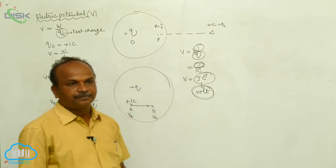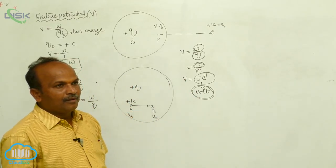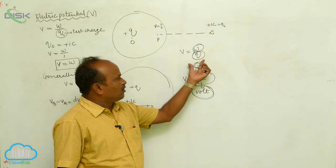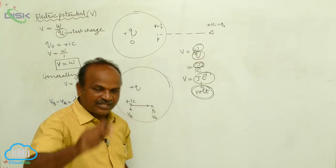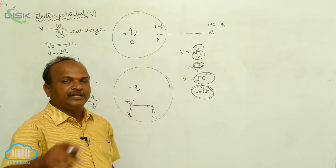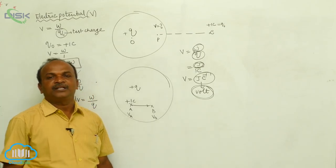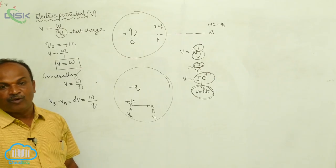What is the definition of volt? One joule of work is done by one coulomb of charge between any two points, then the potential difference is said to be one volt.